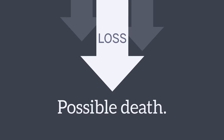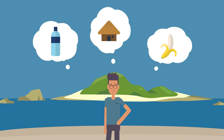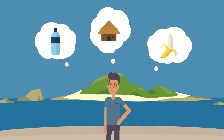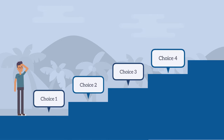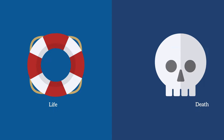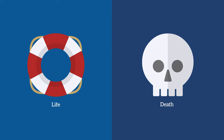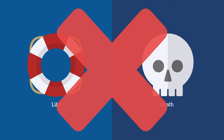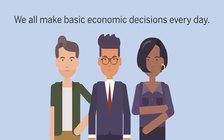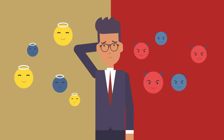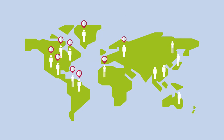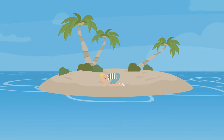Notice that Bob's economic decisions have nothing to do with money. They are simply the choices that he makes facing an uncertain future. Luckily, most of our economic decisions are not matters of life and death, but basic decisions that we all make every day. These decisions all have costs and benefits that must be weighed by the individual, and this is as true for every person anywhere in the world as it is for someone on a deserted island.